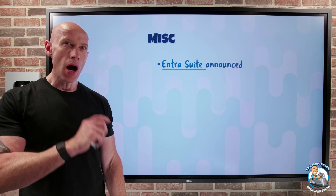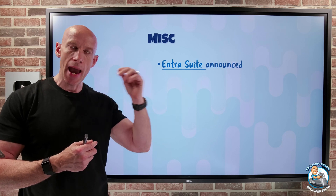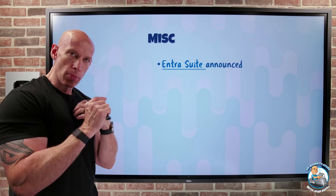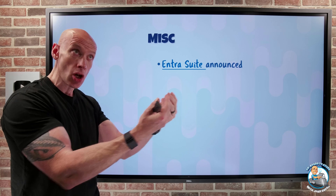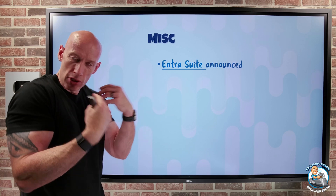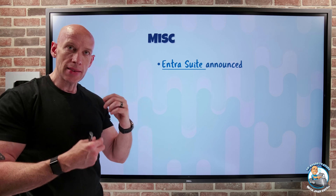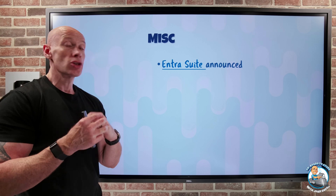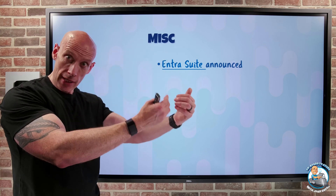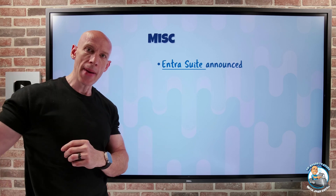On the miscellaneous side, last week I talked about the GA of Entra Private Access and Internet Access. With internet access, when accessing internet-based resources, connectivity from a machine running the Global Secure Access client goes to the Entra edge where you can apply conditional access and different categories of restrictions to protect users. With private access, from that same Global Secure Access client, completely transparently for any TCP or UDP traffic, it establishes a tunnel to the Entra edge, applies conditional access, and enables a constantly verifiable connection to the backend resource.